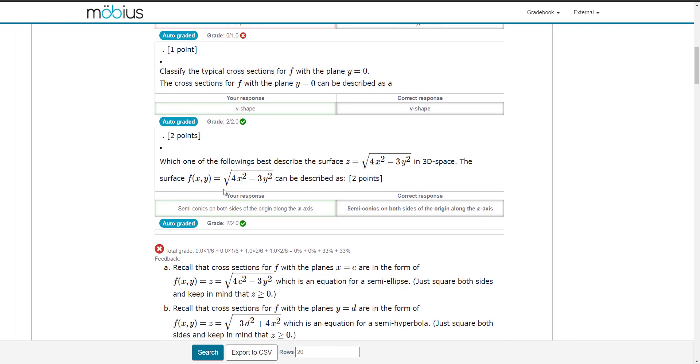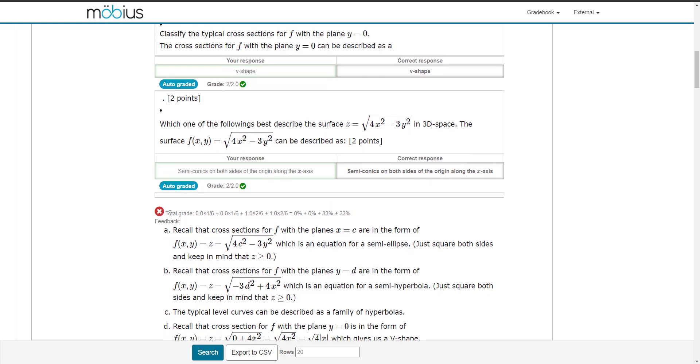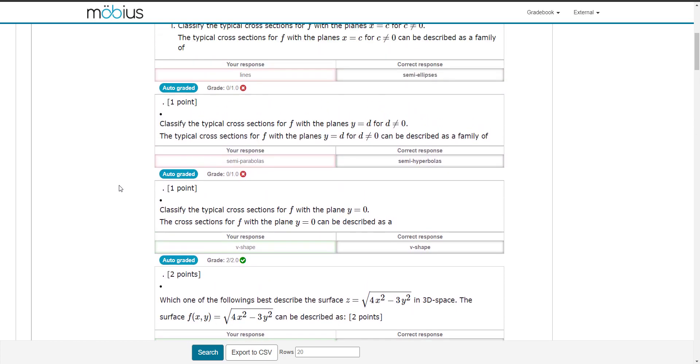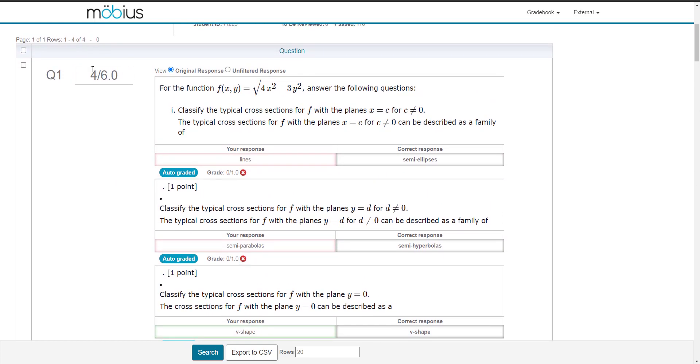At the bottom of all of the sections of a question, and your question may only have one section, but in this case there are four, there's a total grade calculation. And this considers all of the part grade marks that you've been awarded and calculates a total grade. As well, any feedback that may have been authored by your instructor will also be displayed here. This total grade is then represented up in this total grade cell here.